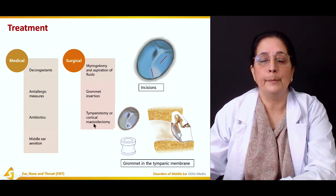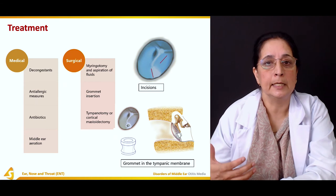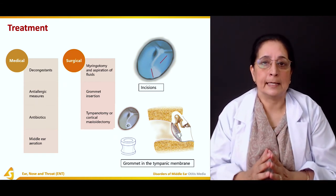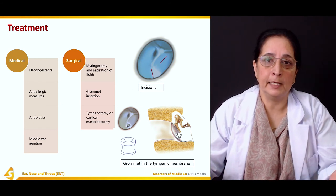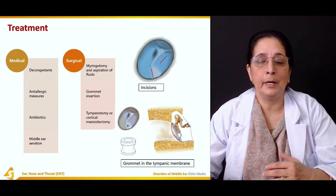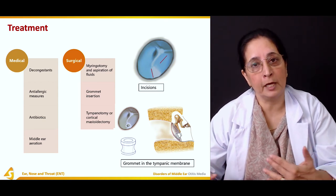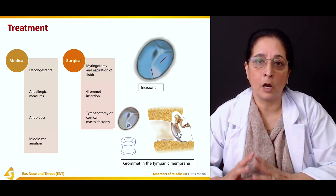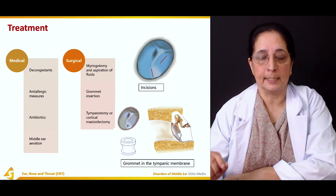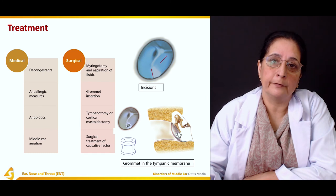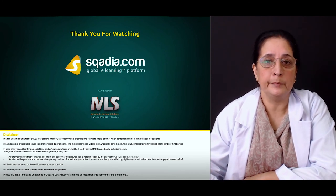Further surgical options include tympanotomy or cortical mastoidectomy — 'ectomy' meaning removal and 'otomy' meaning an opening. Medical treatment can be symptomatic and help relieve the condition; sometimes the fluid is reabsorbed and antibiotics can help. If not, surgical treatment involving an incision and grommet insertion is pursued. Surgical treatment of the causative factor is also important.